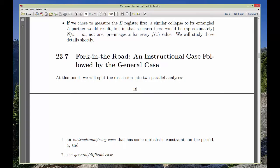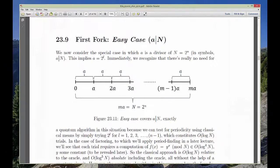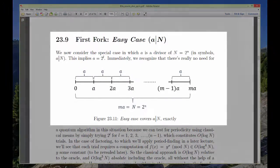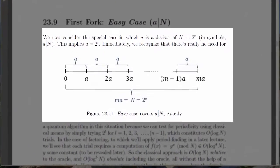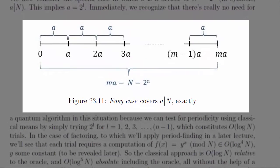We consider the unrealistic case where the period A divides evenly into the original function's domain size. By the way, at this point in the reading, you'll see that what we're calling the domain size is big N, a power of 2.